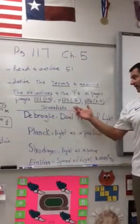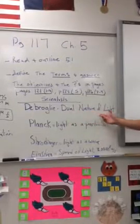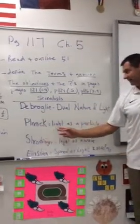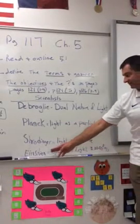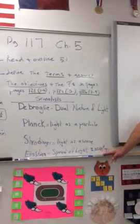We're going to start off with the scientists, and that is de Broglie, and he did the dual nature of light, called the duality of light. And then Planck did light as a particle, Schrodinger did light as a wave, and Einstein did the speed of light. And we're going to get to that when we get to our constants later.